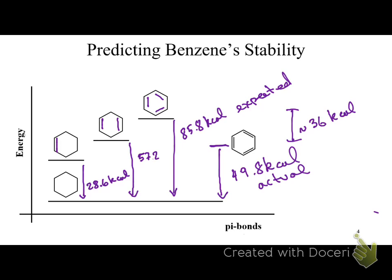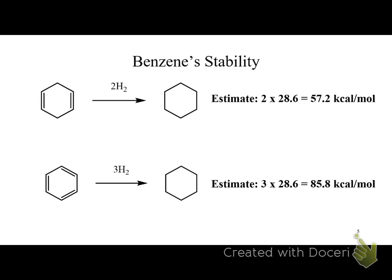This extra stability has interesting consequences for benzene. It's really hard to react benzene because it's so much more stable than expected. Its intermediates are very high in energy, so benzene is very stable. For years it was used as a solvent in organic chemistry because it dissolves everything and doesn't react.